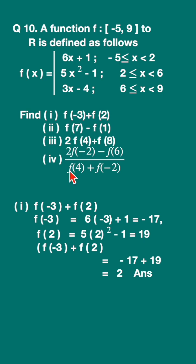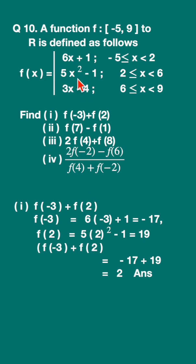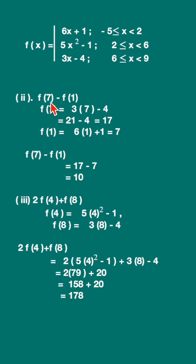First, we find f(-3) + f(2). For f(-3), x = -3 is in the range [-5, 2), so we use 6x + 1: 6(-3) + 1 = -17. For f(2), x = 2 satisfies 2 ≤ x < 6, so we use 5x² - 1: 5(4) - 1 = 19. Therefore f(-3) + f(2) = -17 + 19 = 2.